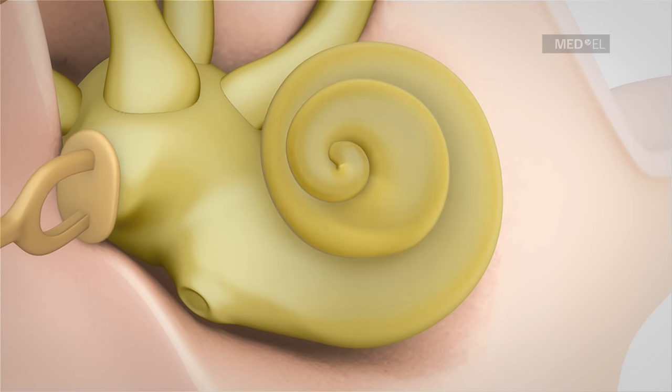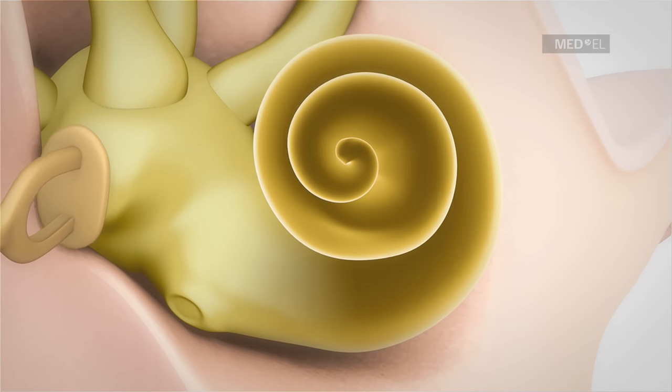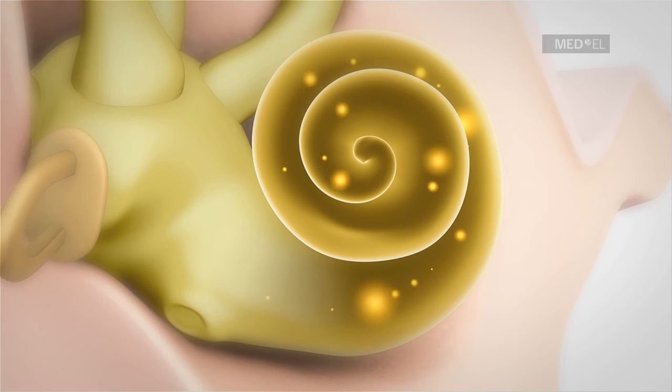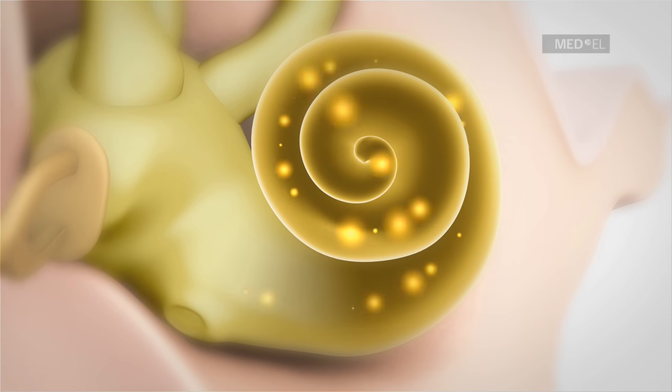It is here that the mechanical energy of sound is converted into complex electrical signals, which are then passed on to the brain. In simplified terms, the cochlea is a spiral-shaped tube filled with fluid.